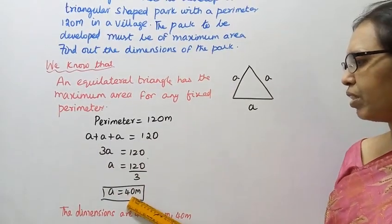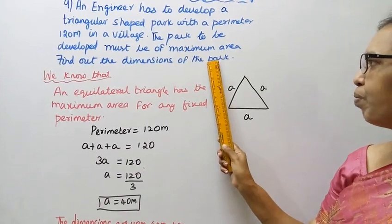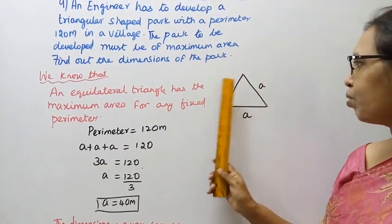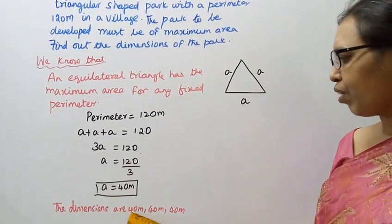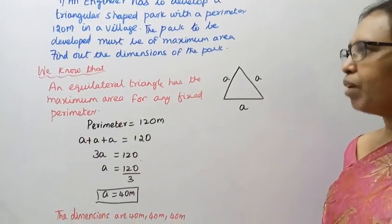A equal to 40 meter. We can find out the dimensions of the park. The dimensions are 40 meter, 40 meter, 40 meter.